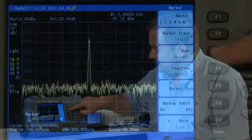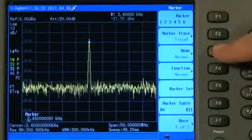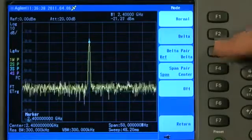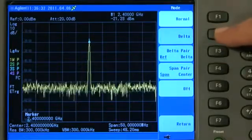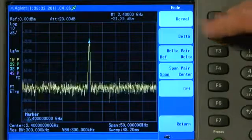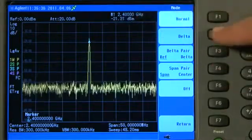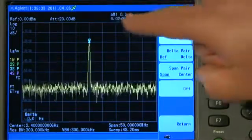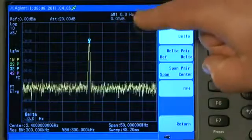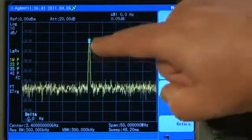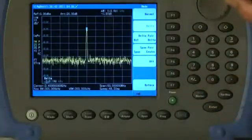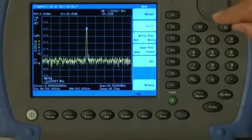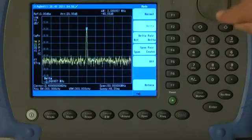Currently the Marker Mode is set to Normal for Marker 1. If I press the Mode button you will see we can have a Delta Marker. This can be quite useful. So if I press Delta, instead of the Marker saying 2.4GHz, I will press the button now. It now says that Marker 1 or the Delta Marker 1 is now 0Hz and 0dB.